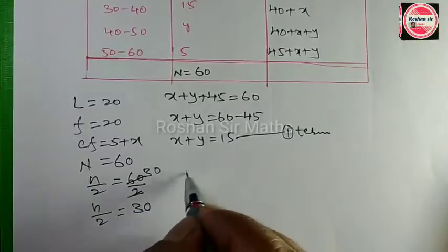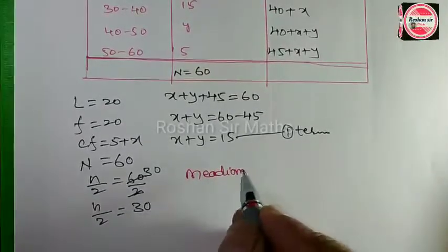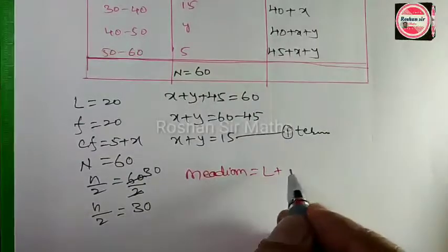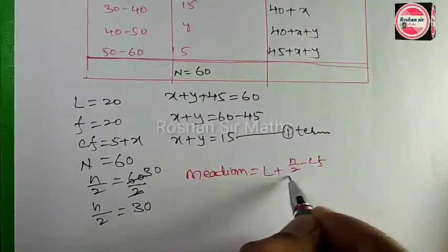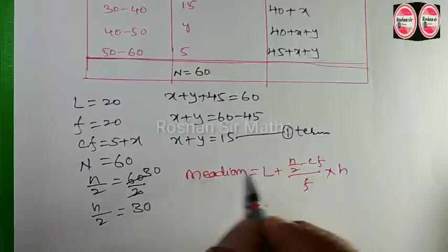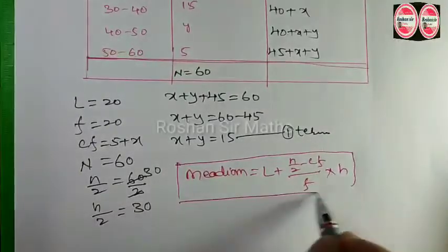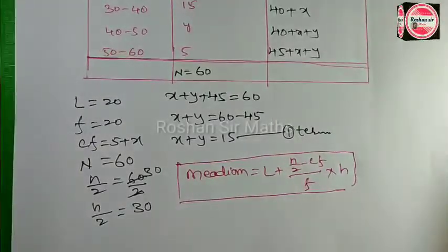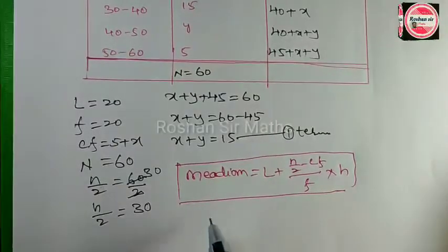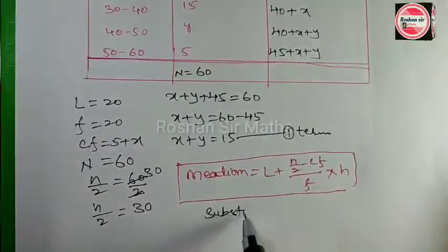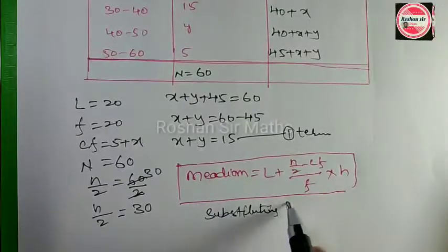Next, we will substitute into the median formula. The formula is: Median = L plus (N by 2 minus CF) by F, into H. Now we will substitute in the formula.